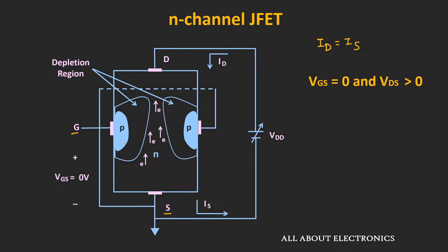Now considering Vgs equal to zero and Vds positive, whenever Vds is positive, these two P-N junctions will become reverse biased, and the width of the depletion region will increase. If you notice, the depletion region is wider at the top of the P-type region and narrower at the bottom. Let's understand the reason behind this.